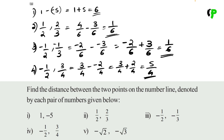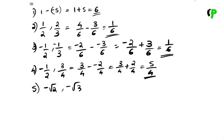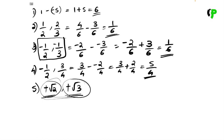Question number 5: negative root 2 and negative root 3. The numbers are negative, so we have two negatives. We can cancel the two negatives — minus minus is plus. So the final answer is root 3 minus root 2. That's a simple idea. First question done, second question in the next video. Thank you.